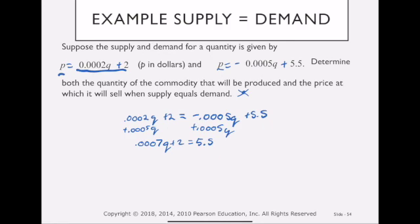Now I need to get my constants together, so I'm going to subtract 2 from both sides. 0.0007Q equals 3.5. Now to get Q all by itself, we want it to have a coefficient of 1. So I'm going to divide by 0.0007. That means Q equals 5,000.